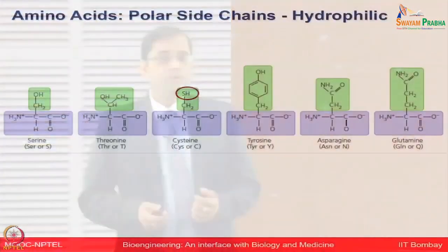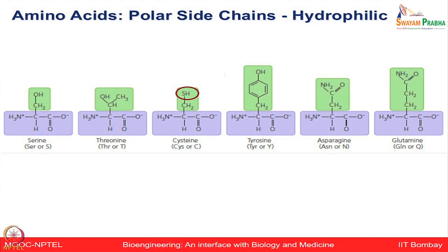Now let us look at polar side chain amino acids, which are hydrophilic in nature. Serine has a CH2OH group and resembles alanine but has a unique hydroxyl (OH) group. Threonine resembles valine but also has a hydroxyl group, giving it an additional asymmetric center. Cysteine has a sulfhydryl or thiol group. Then we have tyrosine, asparagine, and glutamine, which have a CH2-C(NH2)=O bond.